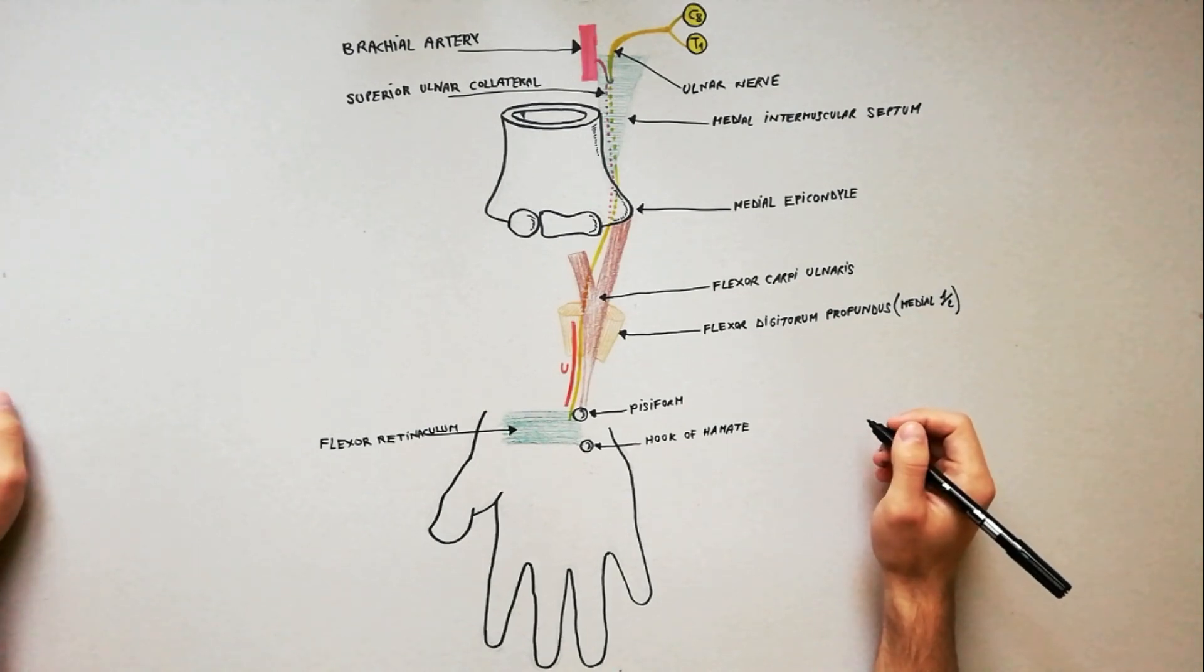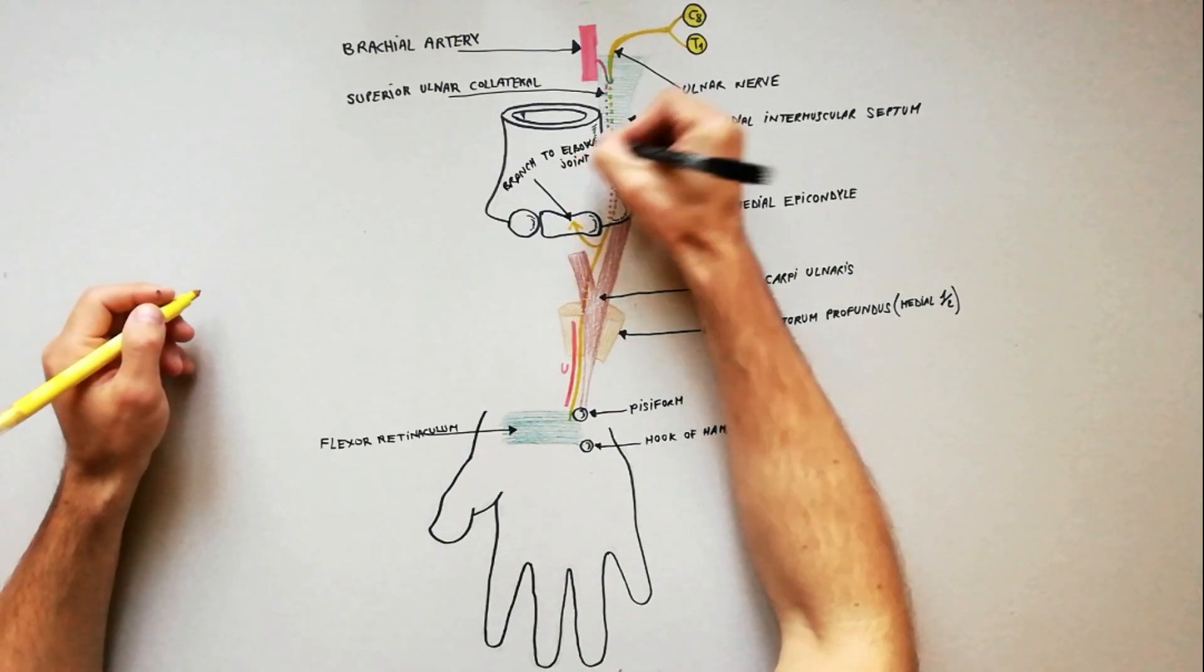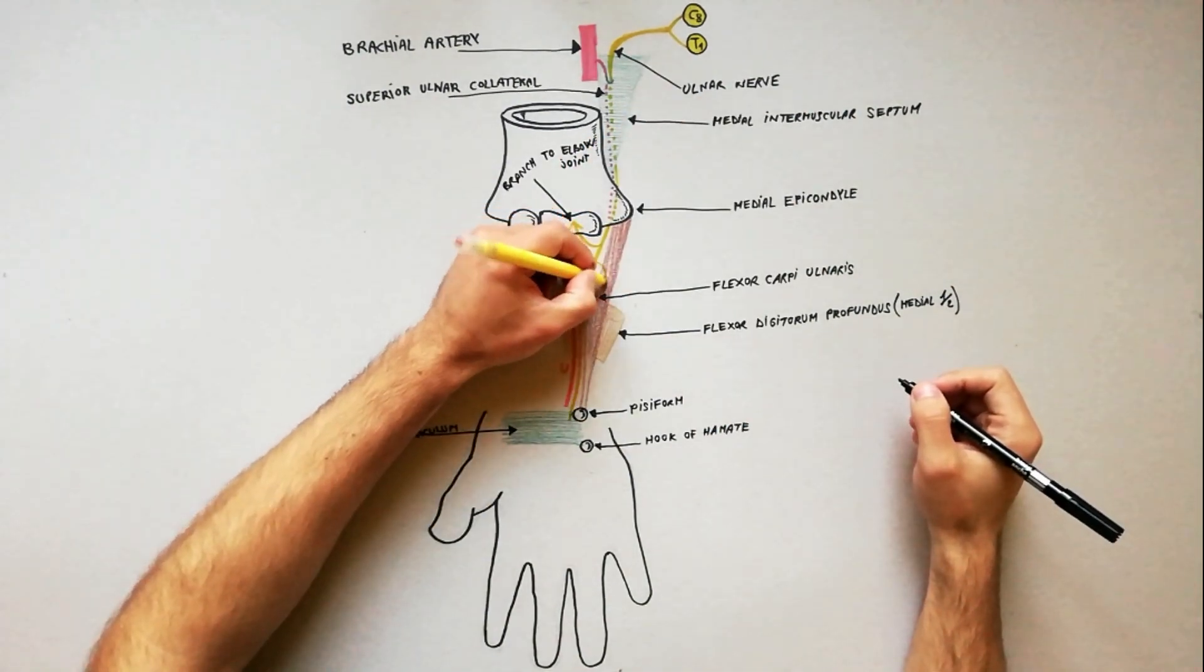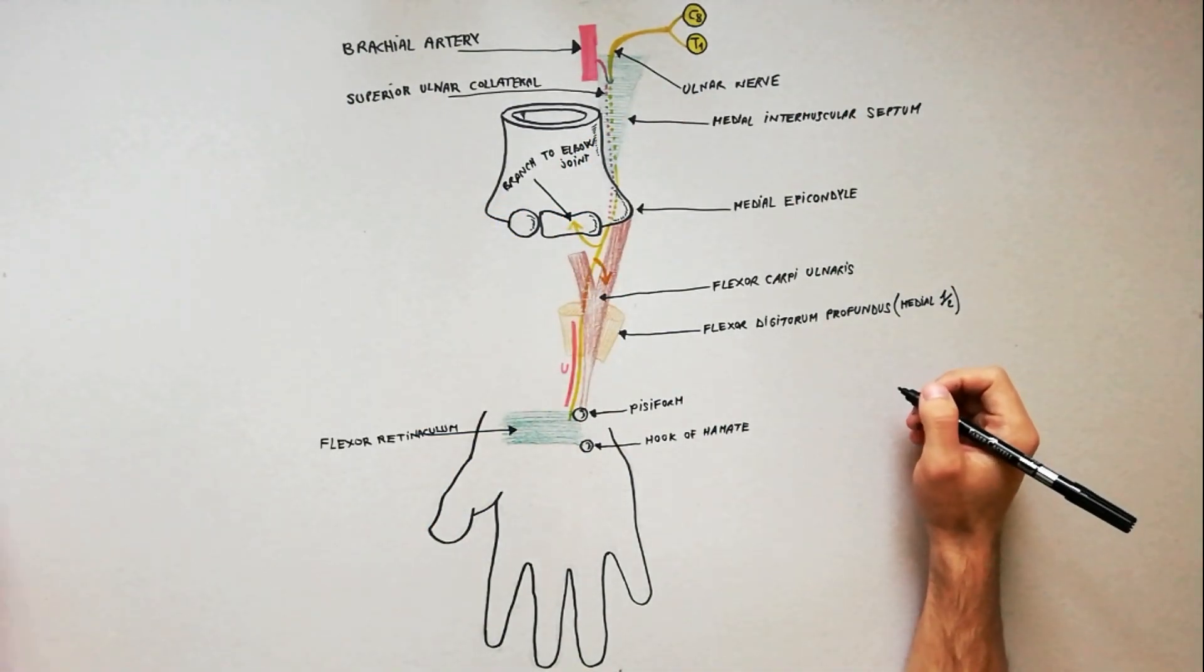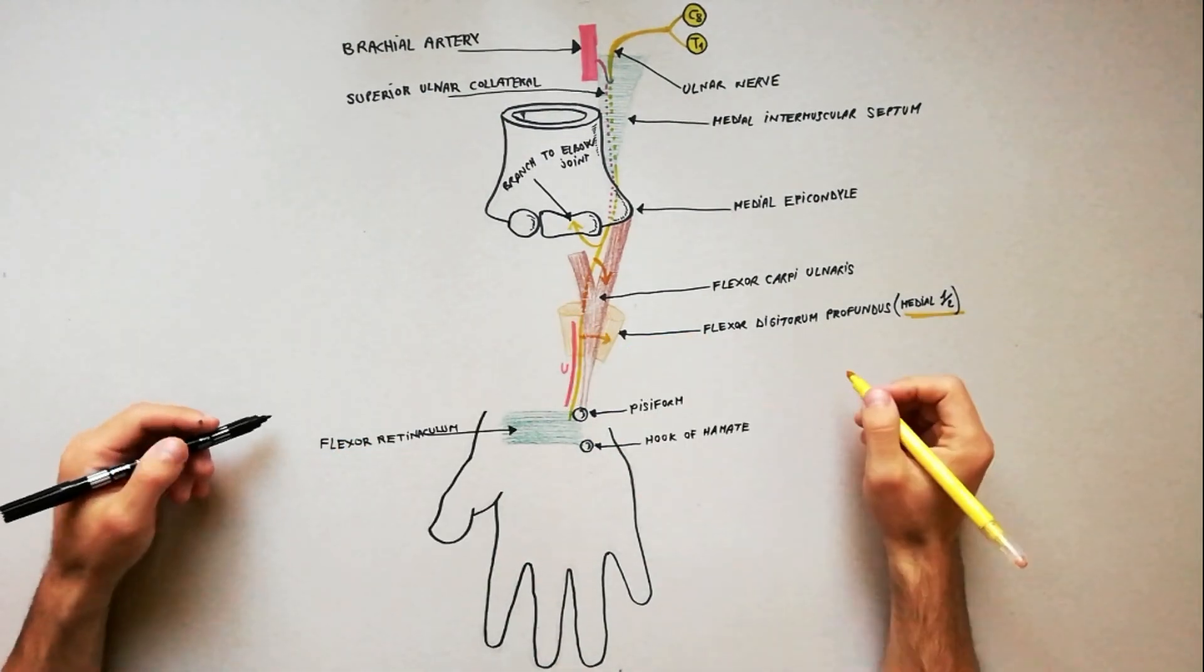In the forearm, it gives off the following branches: branch to elbow joint, branch to flexor carpi ulnaris, and branch to medial half of flexor digitorum profundus.